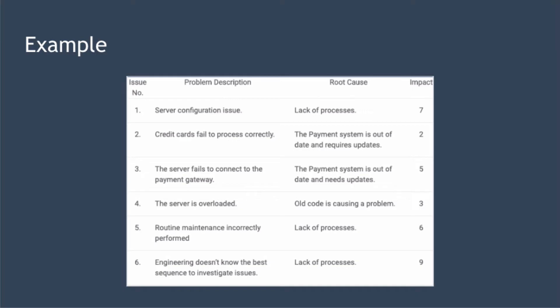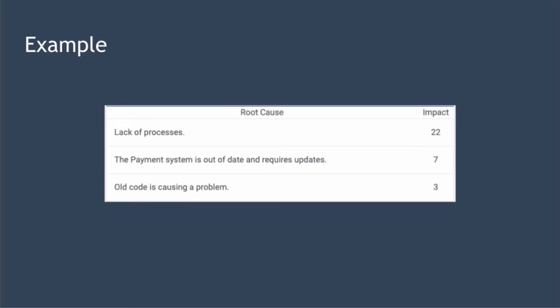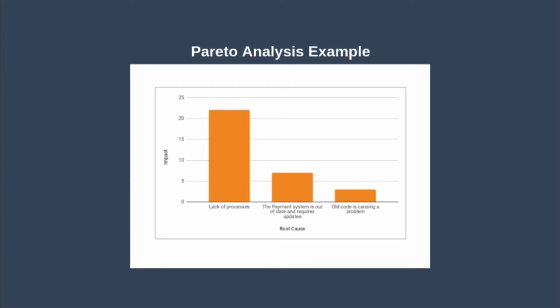The next step is to score each row in some way. Here we score each row from one to ten based on how high the negative impact of the problem is — ten representing the biggest or worst impact on the business and one representing the least. Then we add the scores together for each of the root causes, and you can see the results in this table. If you represent your results graphically, you would see that 80% of the impact is being caused by 20% of the causes.